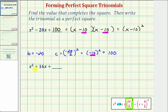In our second example, notice how we have plus 16x, and therefore b equals positive 16. Therefore to form a perfect square trinomial, the constant term must be 16 divided by two squared, which should be eight squared, which equals positive 64.